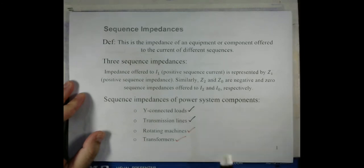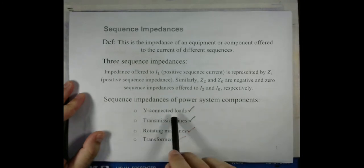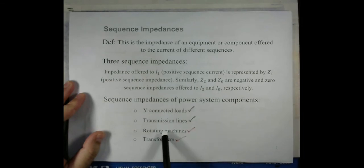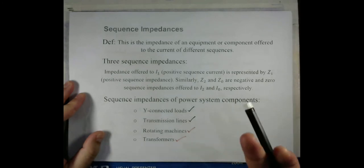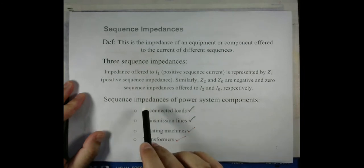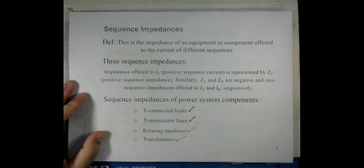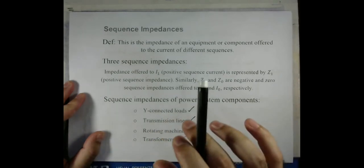We also observed that if the neutral point of the Y-connected load, or even in the case of rotating machines or three-phase transformers, if the neutral point of the Y-connection is not grounded, then the zero sequence current will be zero, meaning the zero sequence network will be an open circuit.